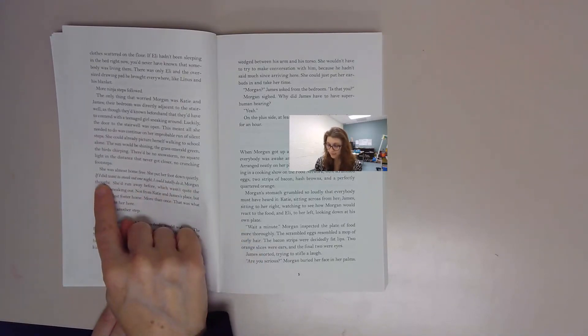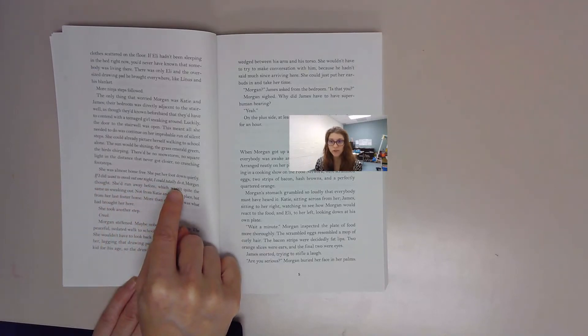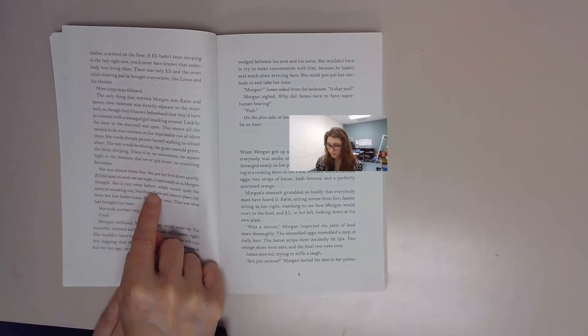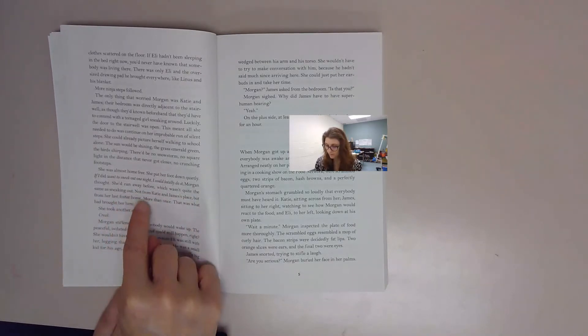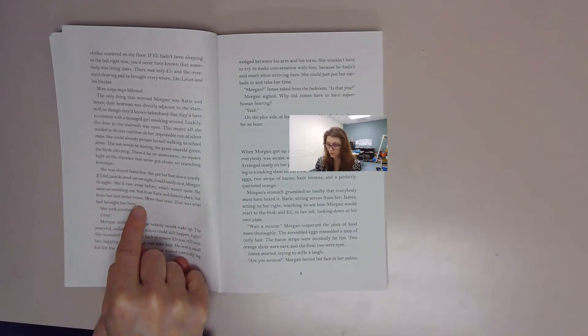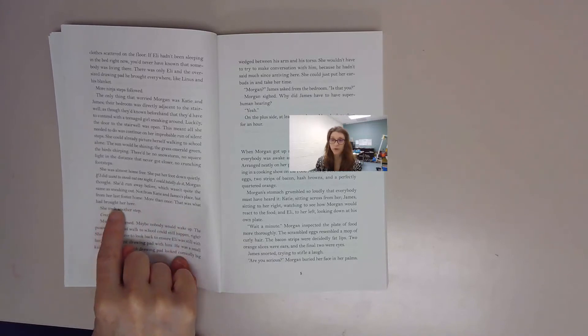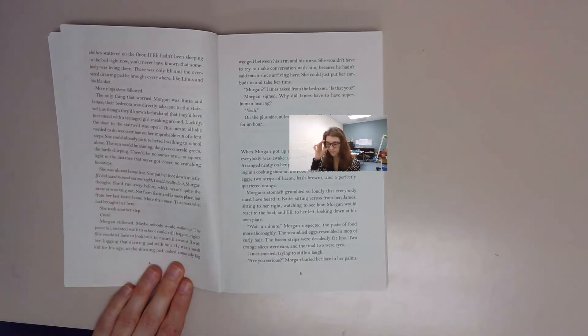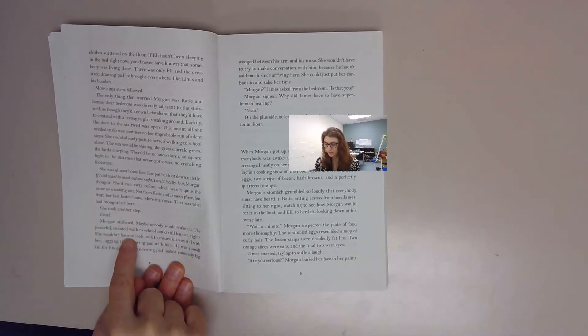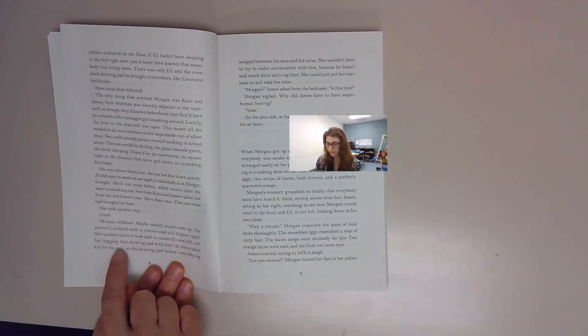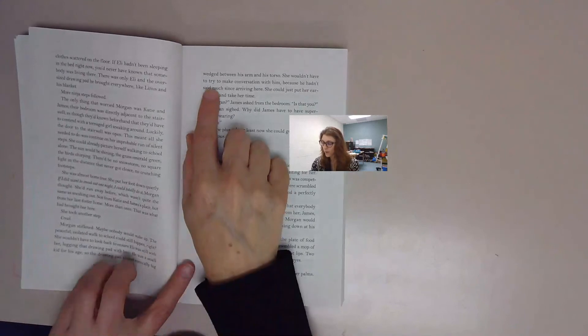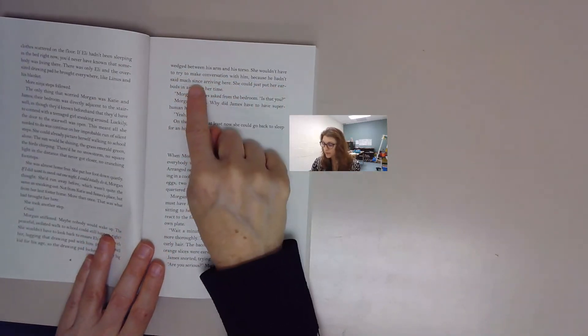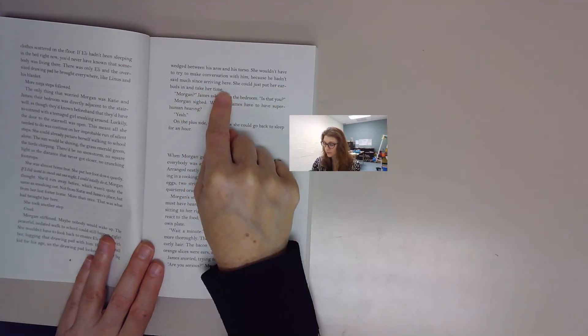She put her foot down quietly. If I did want to sneak out one night, I could totally do it, Morgan thought. She'd run away before, which wasn't quite the same as sneaking out. Not from Katie and James's place, but from her last foster home, more than once. That was what had brought her here. She took another step. Creak. Morgan stiffened. Maybe nobody would wake up. The peaceful, isolated walk to school could still happen, right? She wouldn't have to look back to ensure Eli was still with her, lugging that drawing pad with him. He was a small kid for his age, so the drawing pad looked comically big wedged between his arm and his torso. She wouldn't have to try to make conversation with him because he hadn't said much since arriving here.